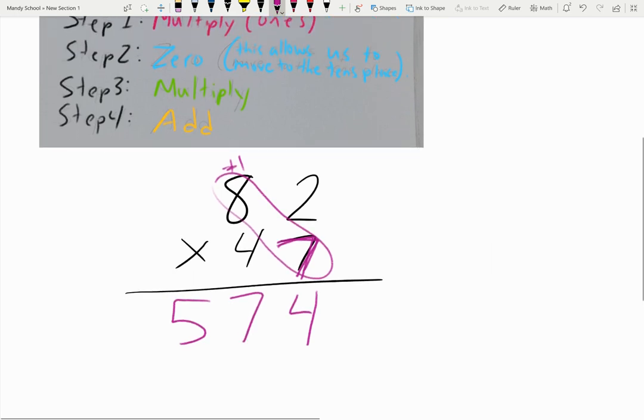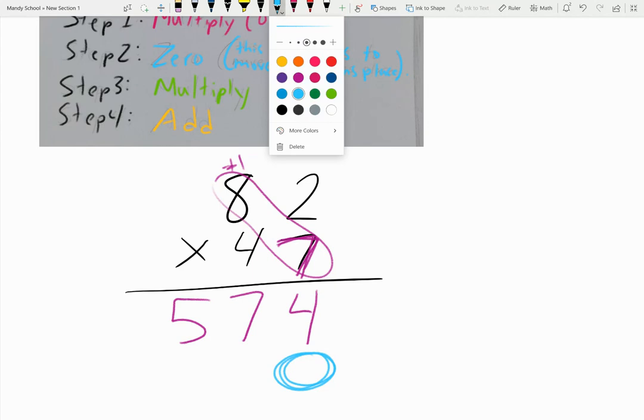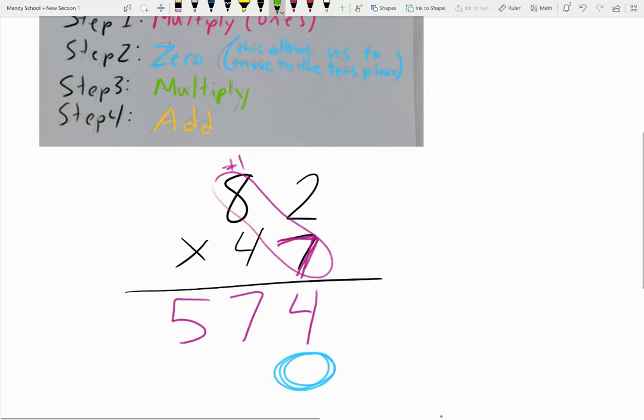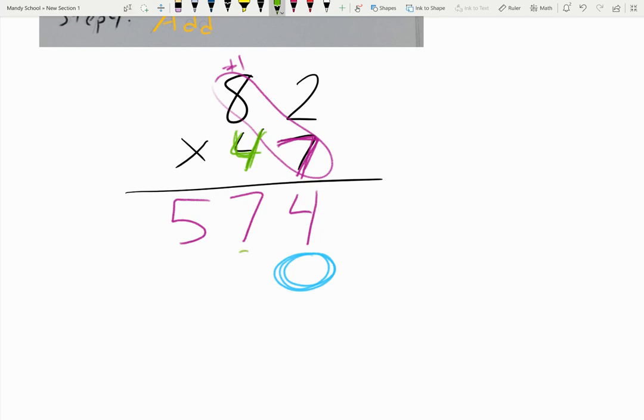And then I'm going to put my zero, which is the blue. So right below, I'll put my zero, because now I'm going to start multiplying the number in the tens place. So I'm going to start out multiplying my four times two, which equals eight. And then I'm going to go up and down eight times four, which equals 32. So write down my 32.